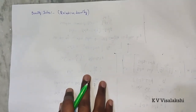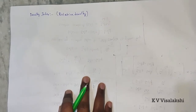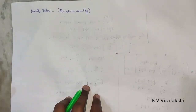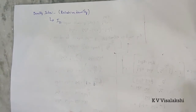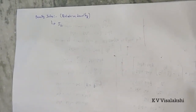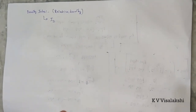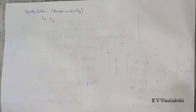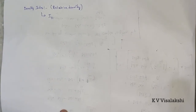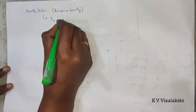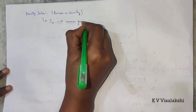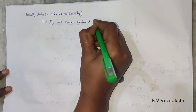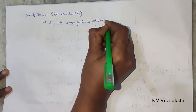This relative density is named in the older terminology of soil. The indication of this density index is ID, and this indicates the relative compactness of the soil mass. This is used in relation to coarse-grained soils or sands.